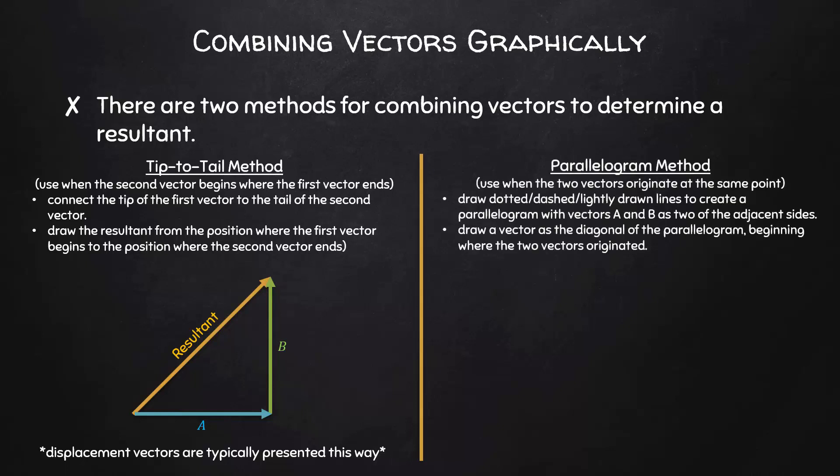The other method for combining vectors is commonly referred to as the parallelogram method. I use this method when two vectors are originating at the same point. To use this method, draw dotted or dashed or lightly drawn lines to create a parallelogram with vectors A and B as two of the adjacent sides. Then we draw a vector as the diagonal of the parallelogram, beginning where the two vectors originated. Force and velocity vectors are typically presented in this way.